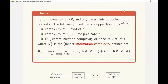Here we are using the notion of inner information complexity. It is defined as this information theoretic quantity minimized over all protocols with error at most epsilon under the worst distribution over inputs.